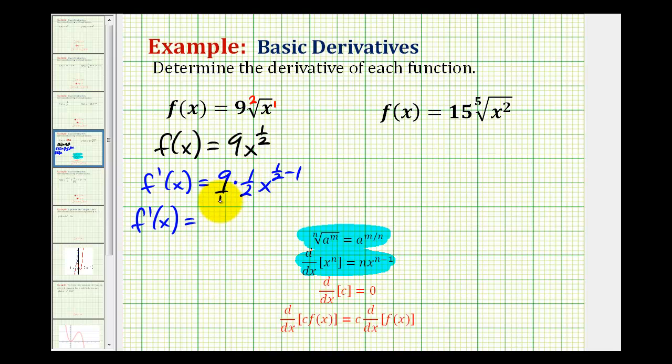So nine times one-half would be nine-halves. And then we'll have x to the power of one-half minus one. That would be x to the negative one-half.